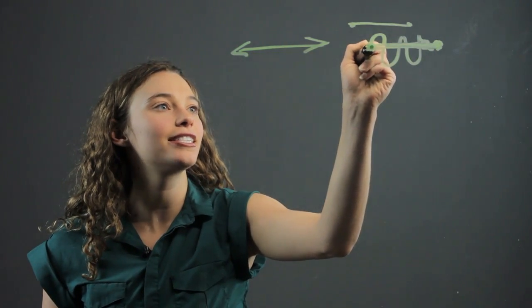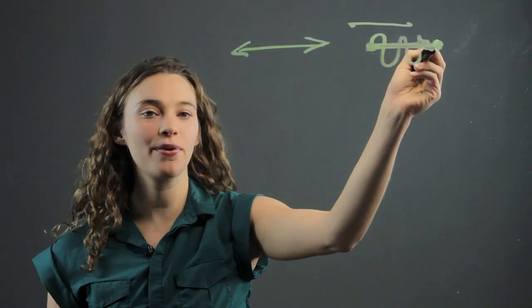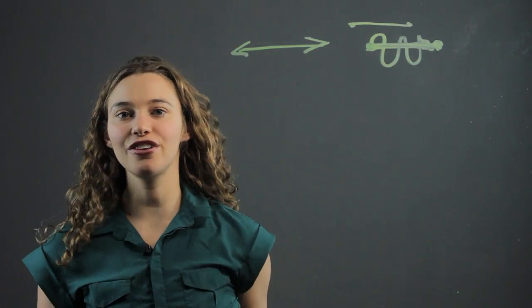And it's a line segment when it has these two endpoints here, and it's a line when it goes on forever.